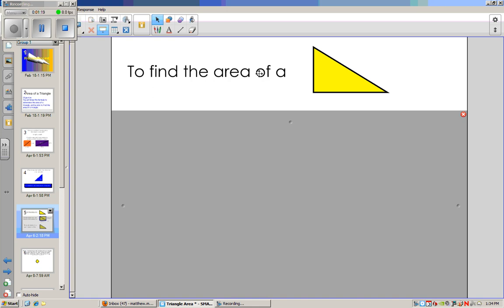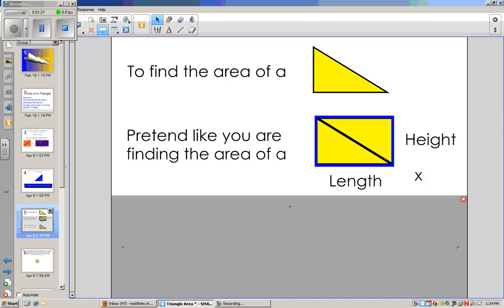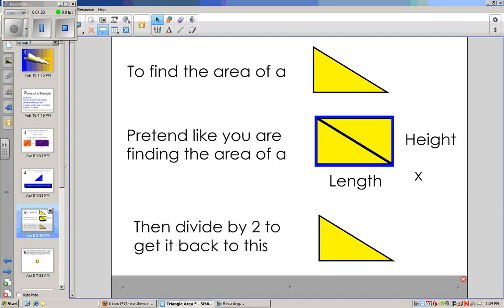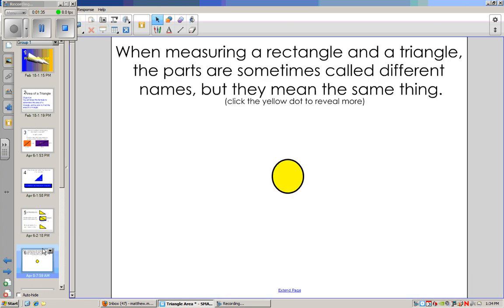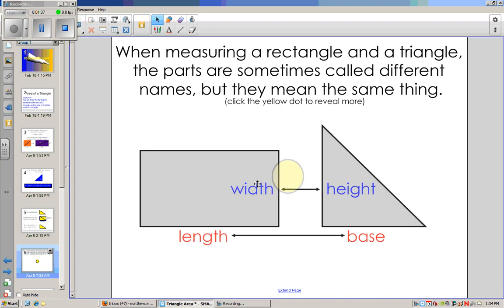And so when we go to actually figure out what we're doing to find the area of a triangle, we first pretend like we're finding the area of a rectangle or a square, and we're just going to do length times height. Once we have that number, then we divide it by 2, and that brings us back to just having the triangle. So another way to look at it is the width or the height times the length or the base gives us the area of this triangle once we divide it by 2.